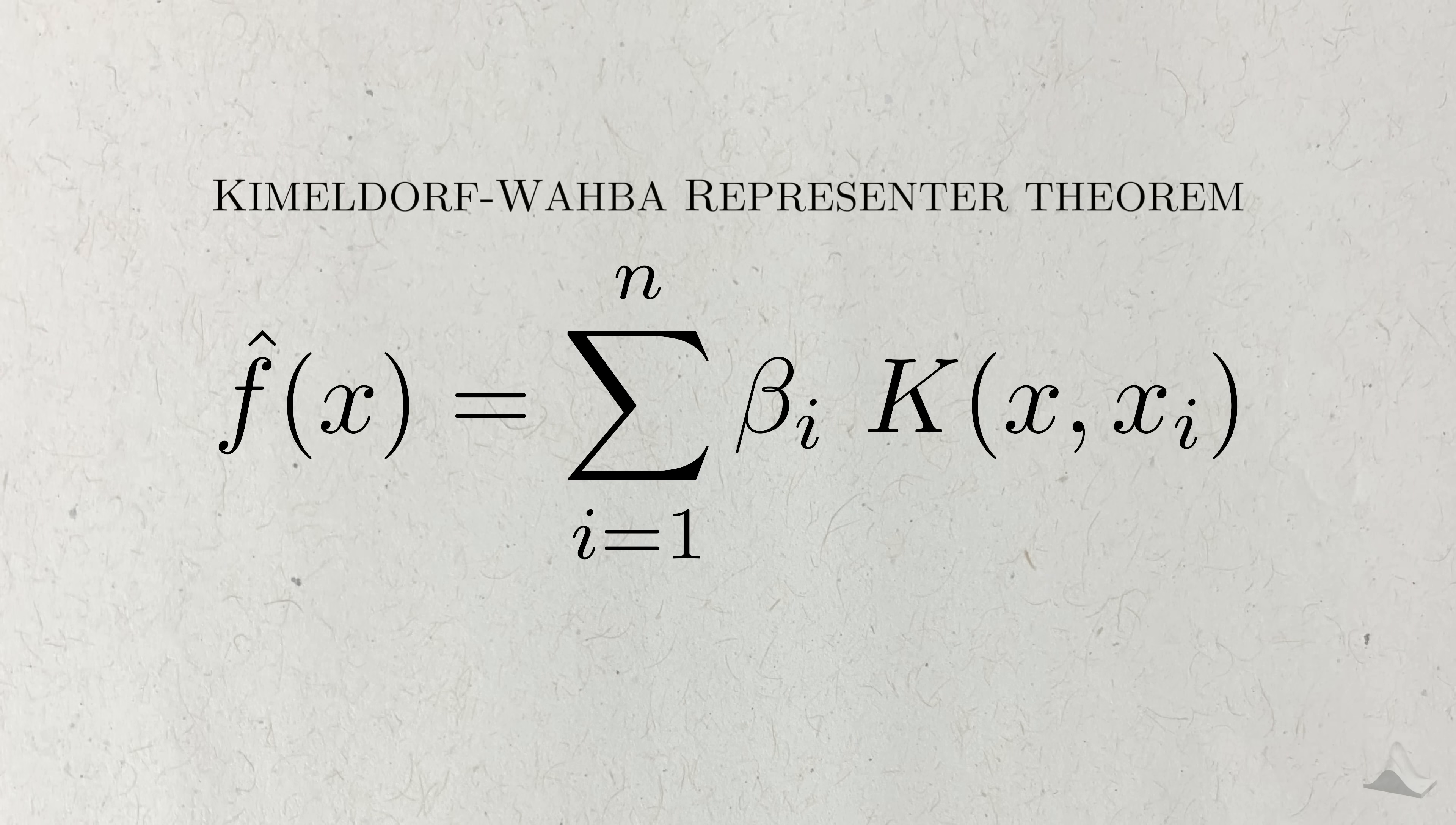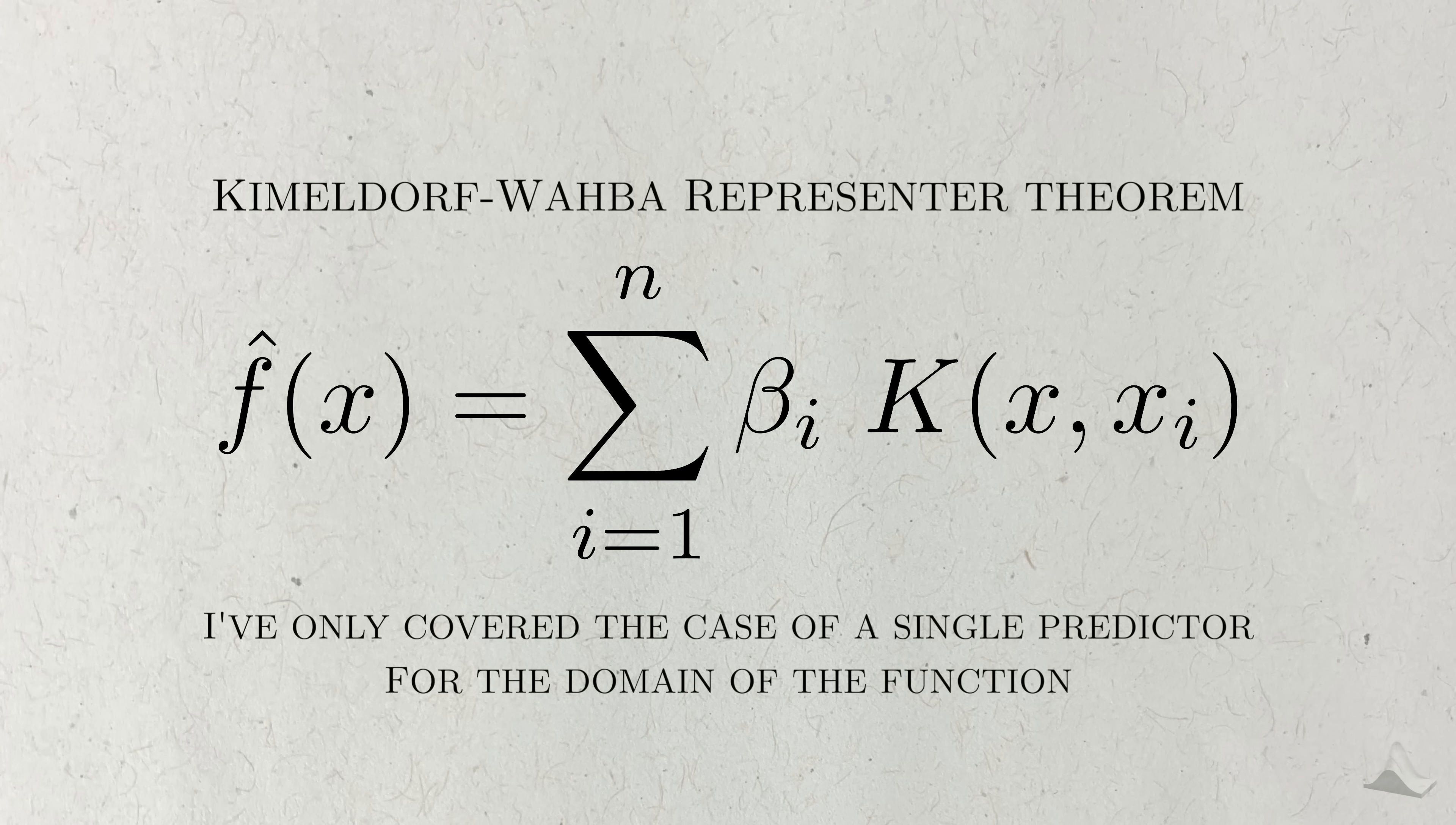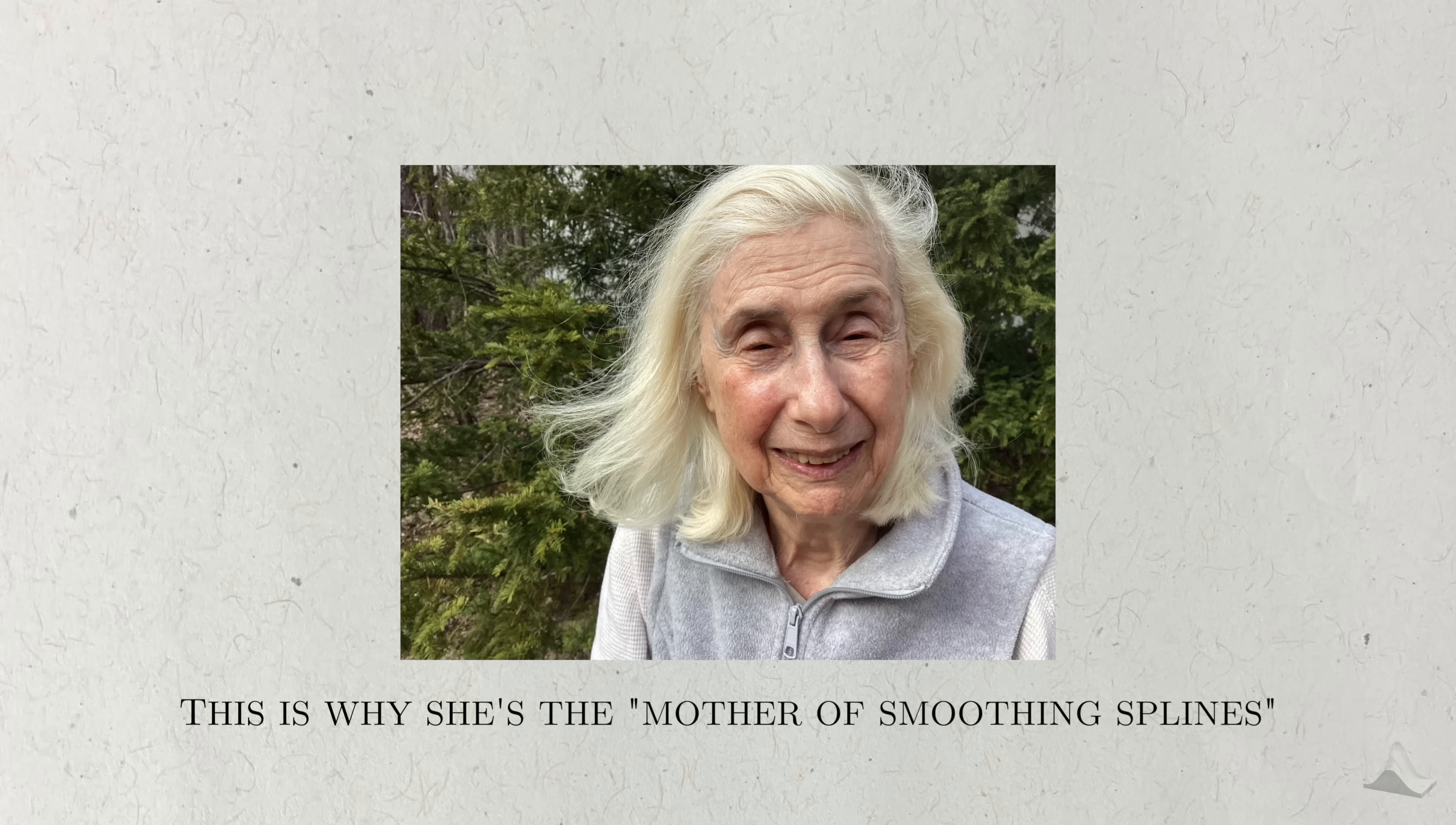Since their paper was published, Kimeldorf and Wahba's results have been generalized to countless other applications. To different loss functions, different penalty functions, and all sorts of different types of functions. In this video, I've only dealt with the simple case where the domain of the function was a single predictor. But these methods have much more interesting applications ranging from machine learning, to hand-drawn climate data, to even medical image processing. All of them using smoothing splines in some form. And that's why Grace Wahba was called the mother of smoothing splines.